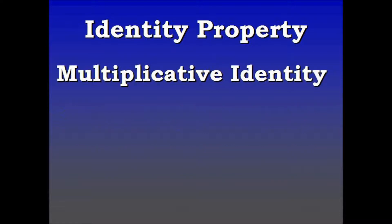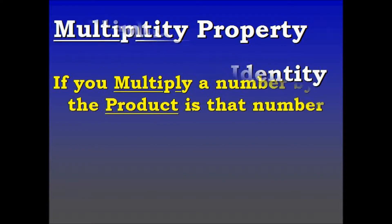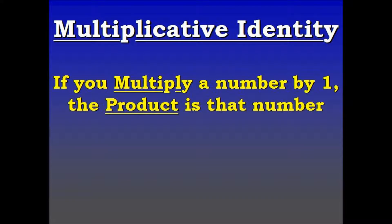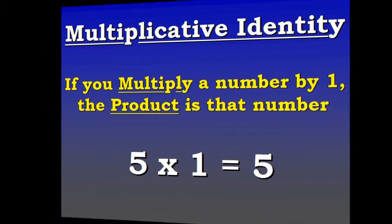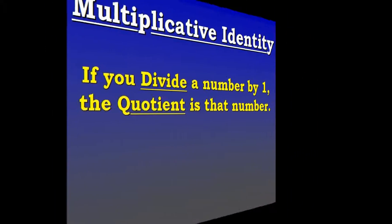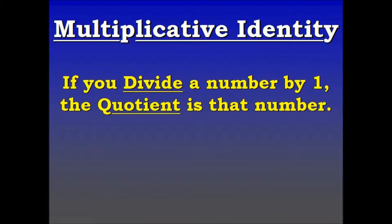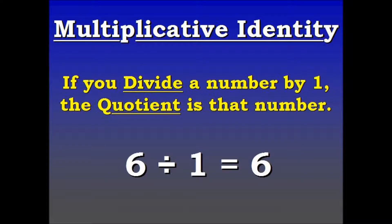So we use the multiplicative identity. If you multiply a number by 1, the product is that number. Here we have 5 times 1 equals 5. If you divide a number by 1, the quotient is that number. Here we have 6 divided by 1 is 6. So that's the multiplicative identity.